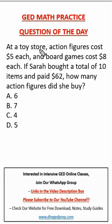It says, at a toy store, action figures cost $5 each. Action figures, let's say it's A. So I'm going to give A is equal to $5 each. And board games cost $8 each. I'm going to give board game as B, so B is equal to $8.